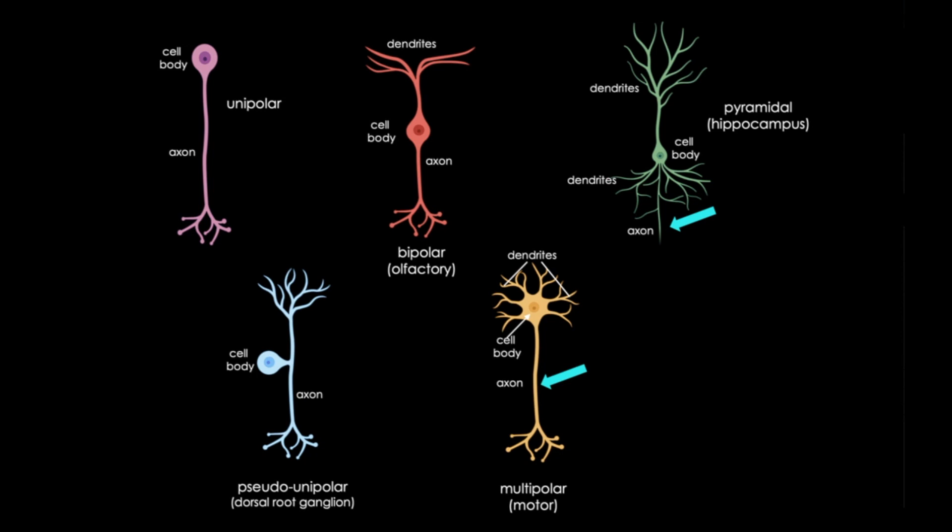While interneurons are local axons, they're usually GABAergic and inhibitory. The complexity of the dendritic arbor can also vary from simple to very branched and elaborate. And again, this reflects different functions.